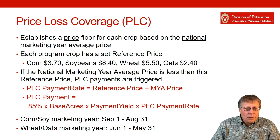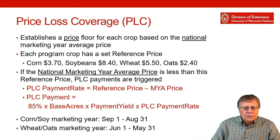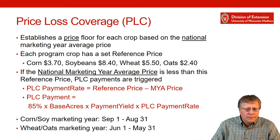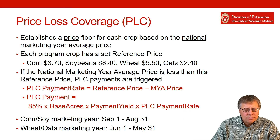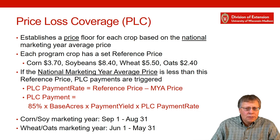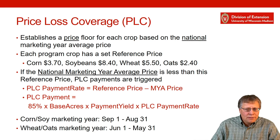To be clear, the marketing year for corn and soybeans runs from September 1st until August 31st. So the 2019 marketing year for corn and soybeans does not end until August 31st of 2020. Wheat has a slightly different marketing year, running from June 1st until May 31st of the subsequent year, so the marketing year for wheat and oats doesn't end until May 31st, 2020.